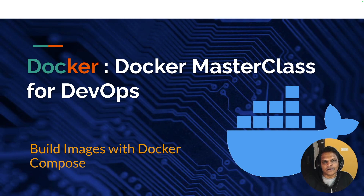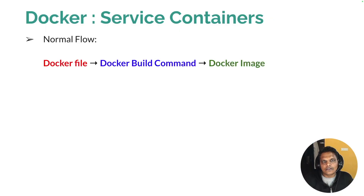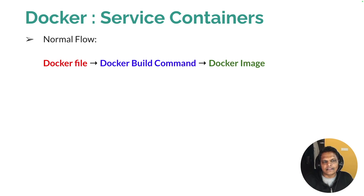Let's see how we can build images in Docker Compose. The normal flow of building an image in Docker is: you write the Dockerfile, then you execute the docker build command, and the docker build command will create your Docker image.